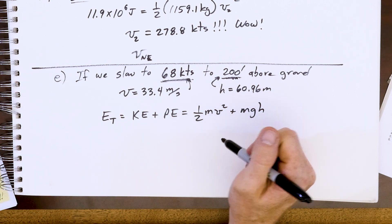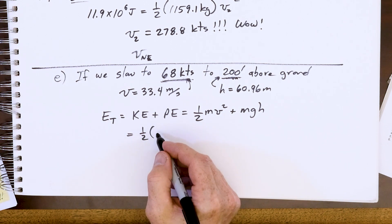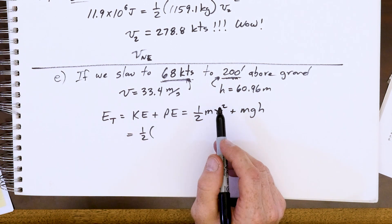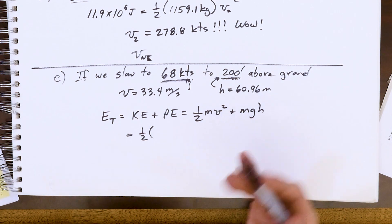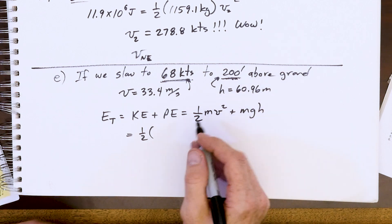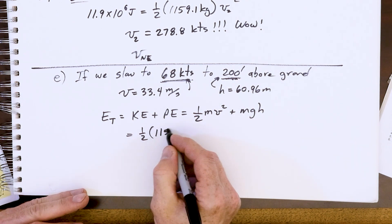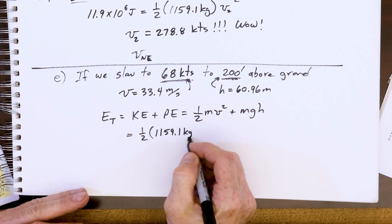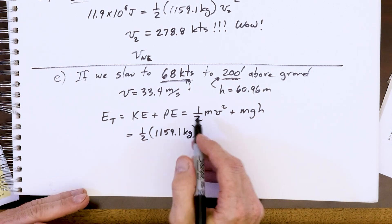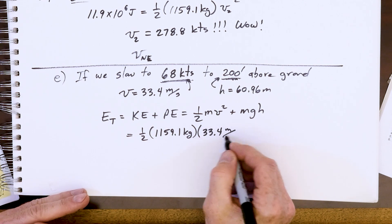So we plug in here and we get ½ our mass is still 2550. Now that is going to be a little different because we're burning fuel and you're going to be a little bit lighter than 2550, but as an academic exercise here we'll just leave it at the 2550, which we had is 1159.1 kg. 2550 was pounds, remember, this is kilograms. We've now slowed it down to 68 knots, 33.4 m/s.